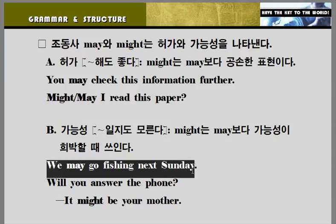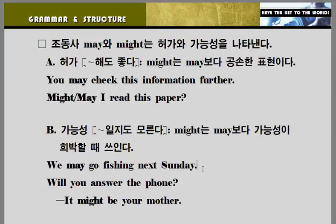'We may go fishing next Sunday.' — 우린 다음 주 일요일에 낚시를 갈지도 모른다. 'We do answer the phone. It might be your mother.' 엄마일 수도 아닐 수도 있고, 좀 더 가능성이 희박할 때 'might'를 쓰게 되죠. 조심하세요. 'might'가 언제나 'may'의 과거형으로만 쓰이는 것은 아닙니다. 허가를 나타낼 때는 좀 더 공손한 표현, 가능성을 나타낼 때는 좀 더 가능성이 희박할 때 씁니다.